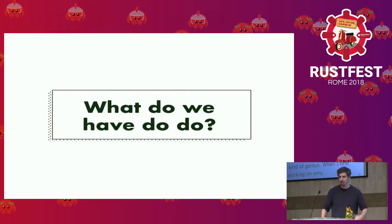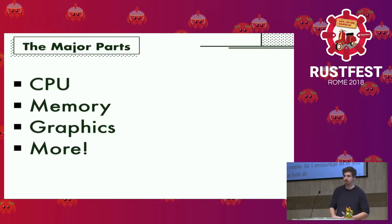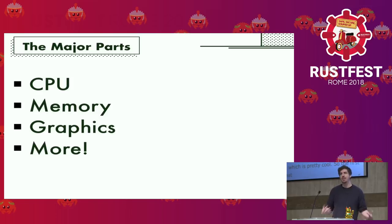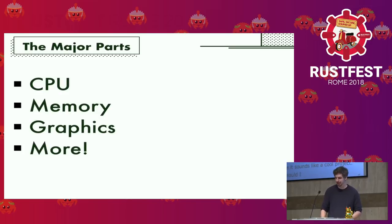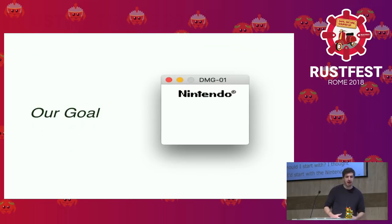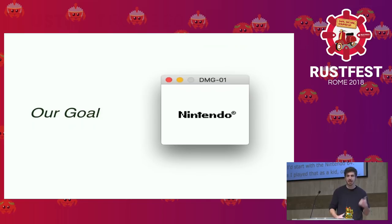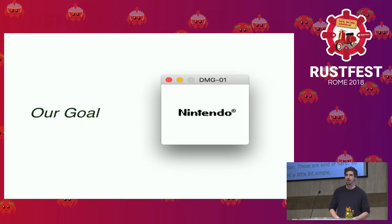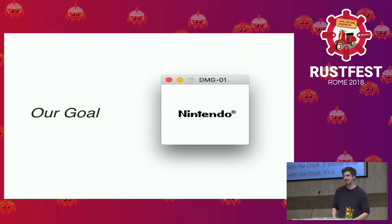Now, what do we actually have to do to emulate the Game Boy? There are a couple of major parts: the CPU, which is the brains of the computer; memory; graphics; and a whole bunch more that I won't even touch on, like sound and input. Unfortunately this talk is only 30 minutes long, so our goal for today is to get the Nintendo logo scrolling working — when you turn on the Game Boy, the Nintendo logo scrolls down. We won't get to the da-ding because that's sound, but I'll leave that up to you as homework.